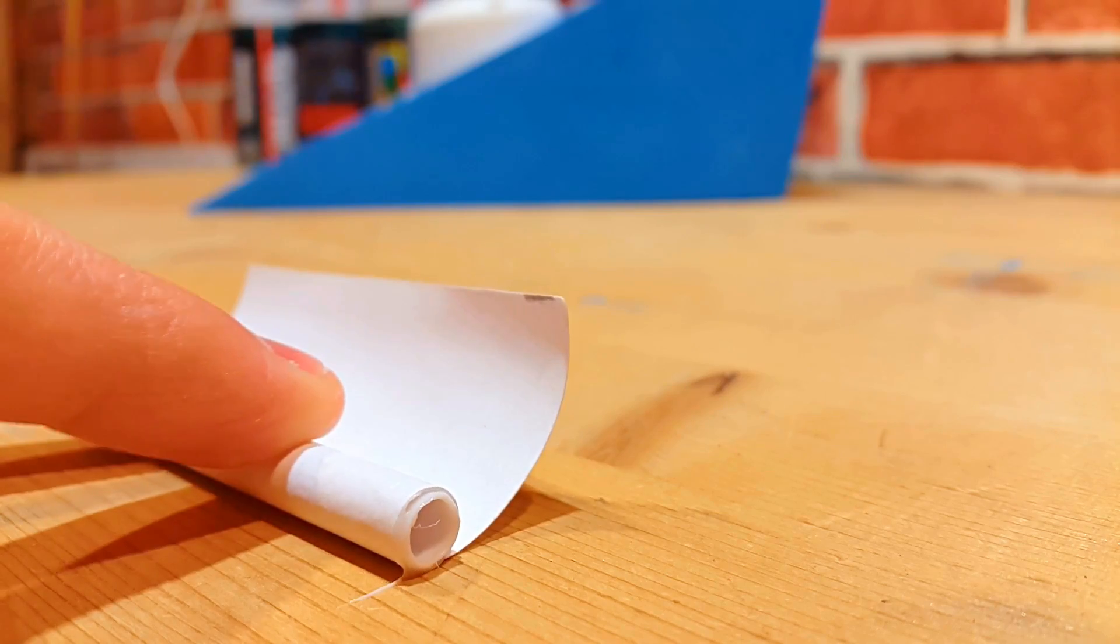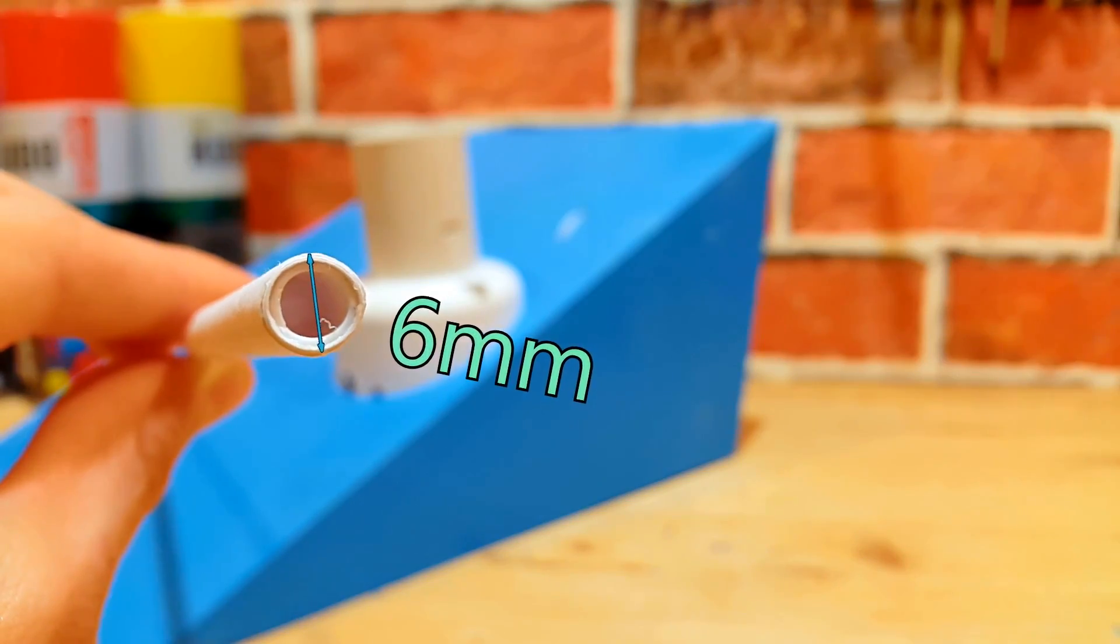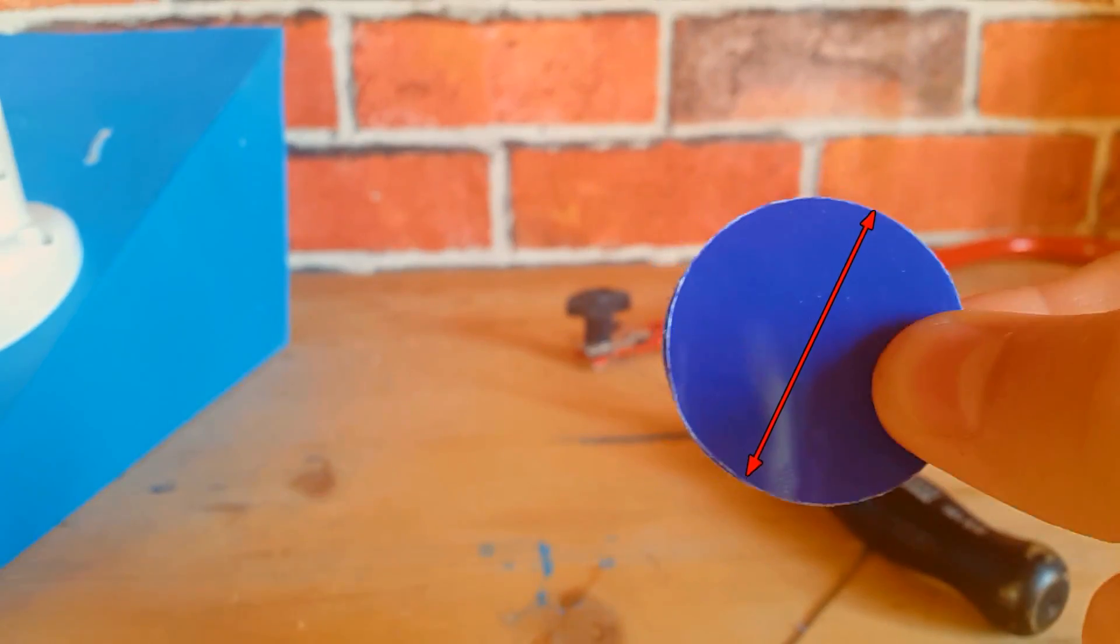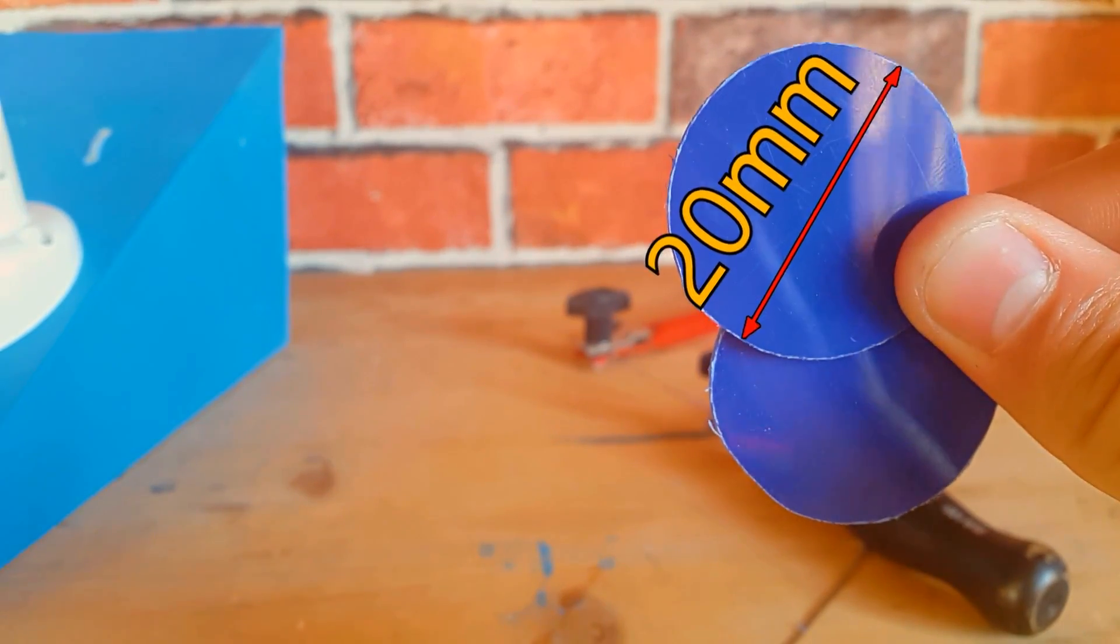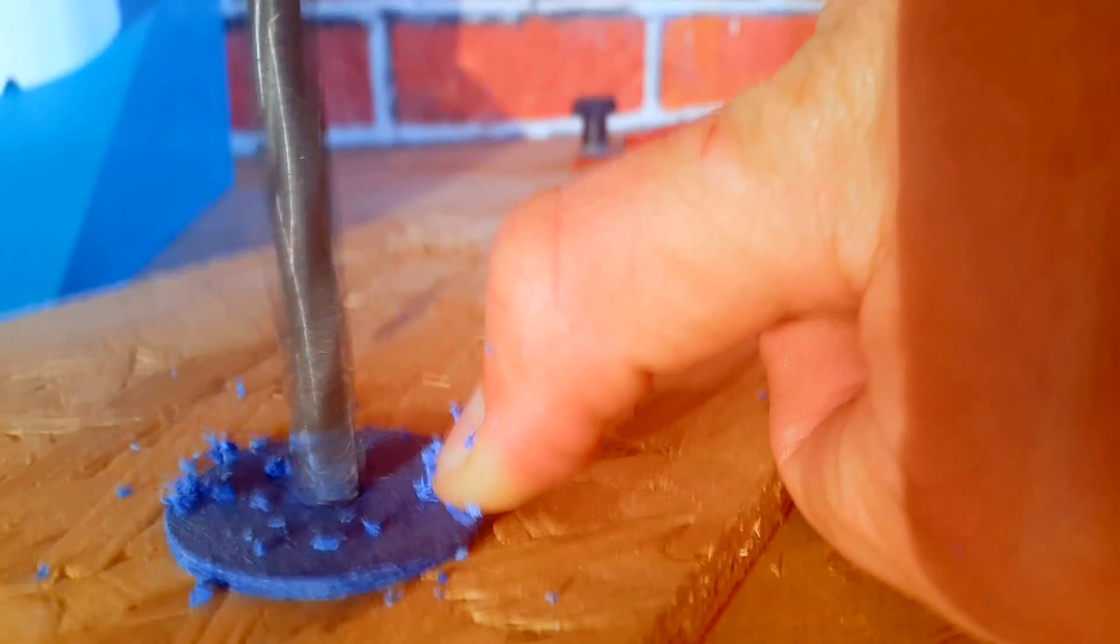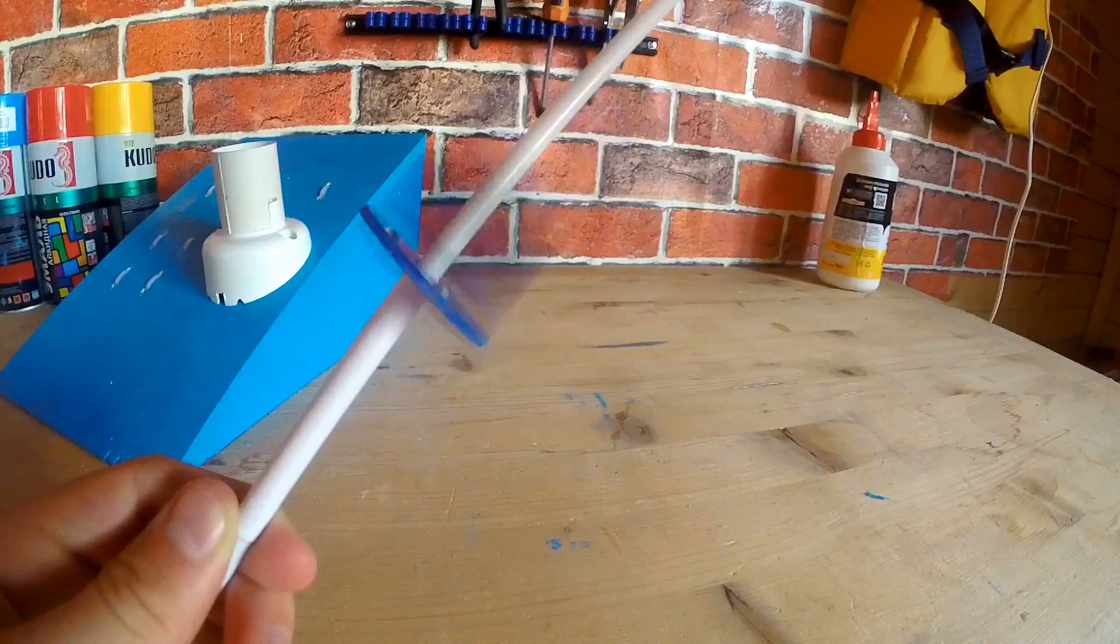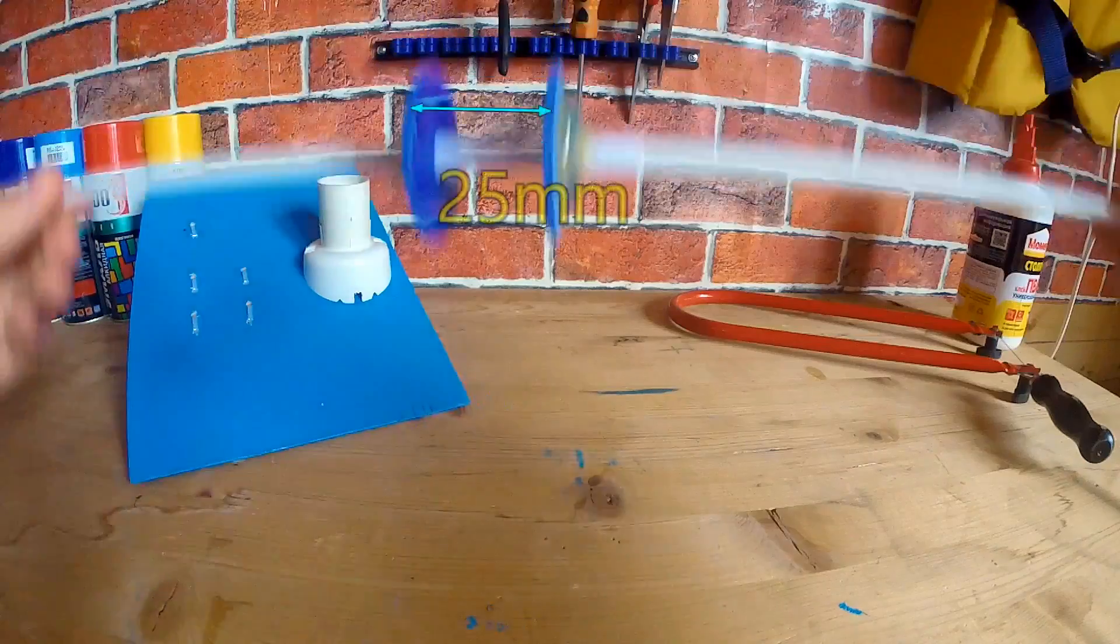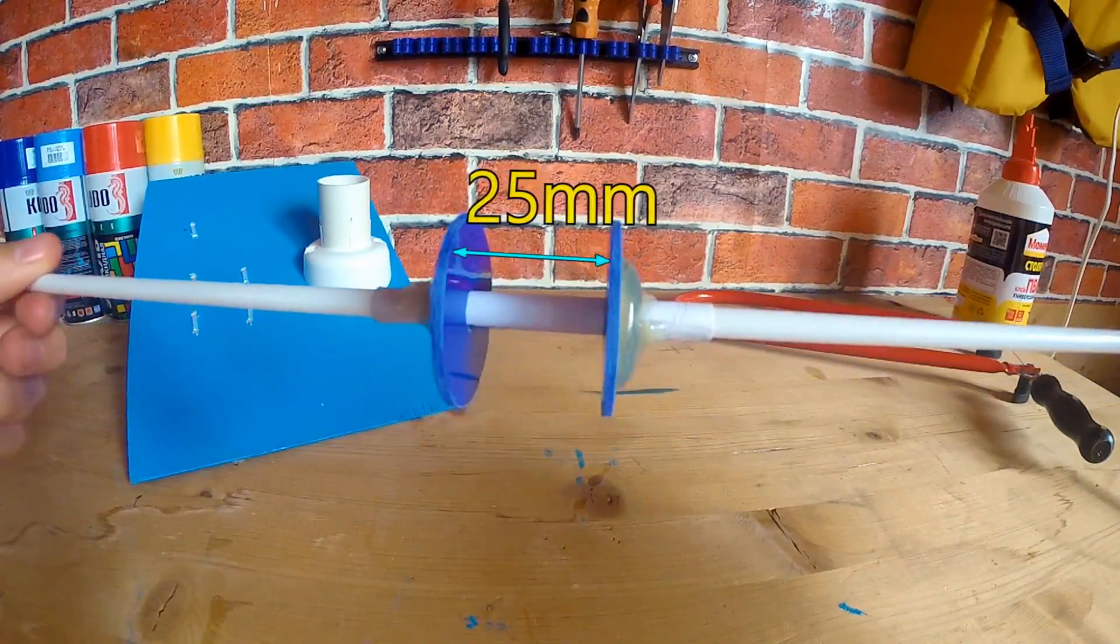Now I'm making the paper coil using liquid glue. Outer diameter is 6 mm. Then we need to cut out two plastic circles of 20 mm diameter. Now drilling a hole in the center of the circles and joining them with a barrel. The space between the circles must be 25 mm.